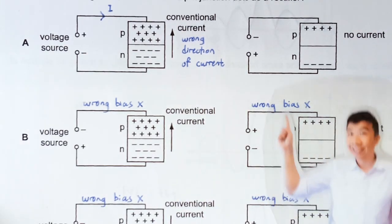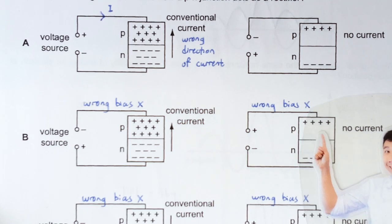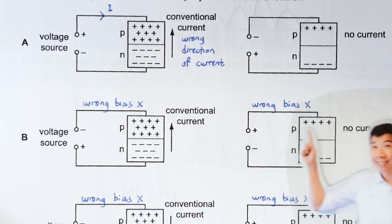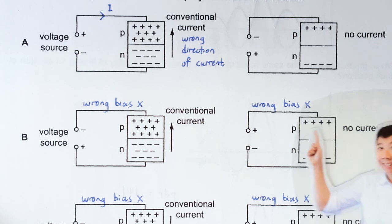And this is wrong also because this connection is actually putting the p-n junction in forward bias. When you are in forward bias, you shouldn't have such a widened depletion region and you should be having current flowing.